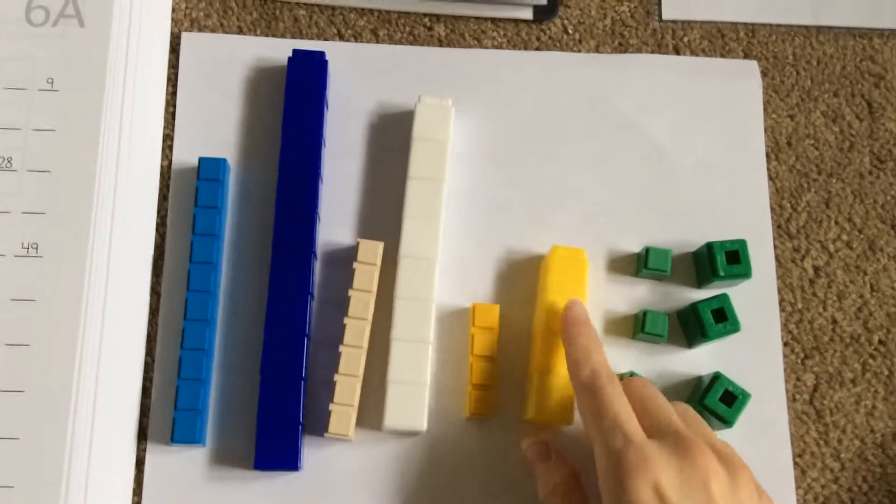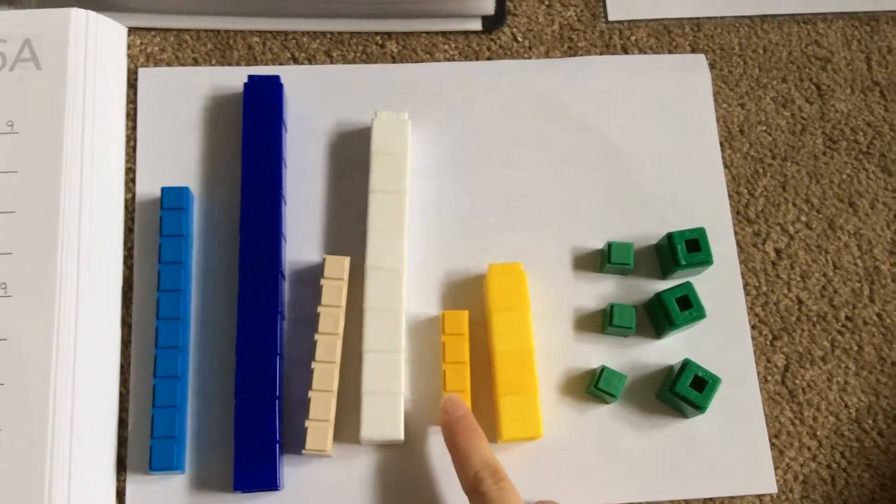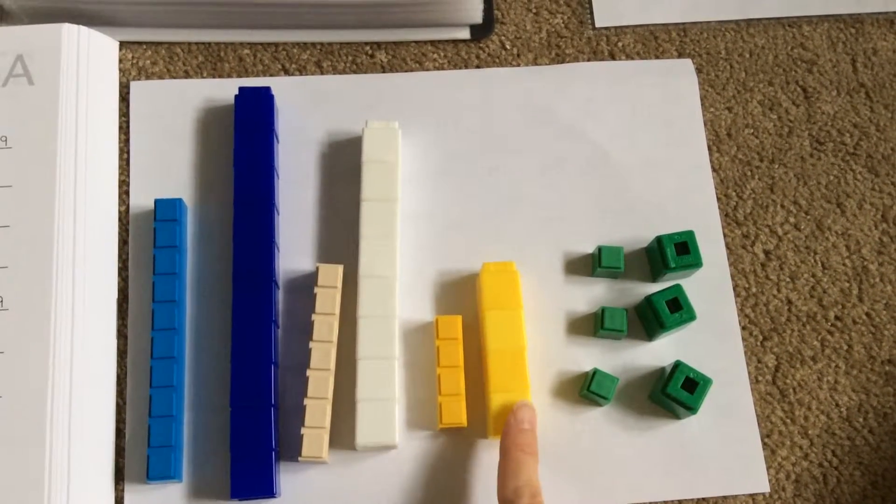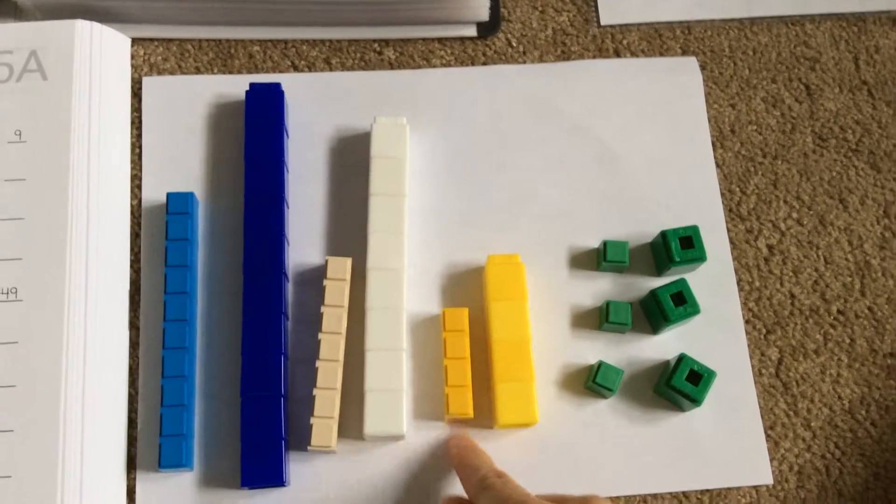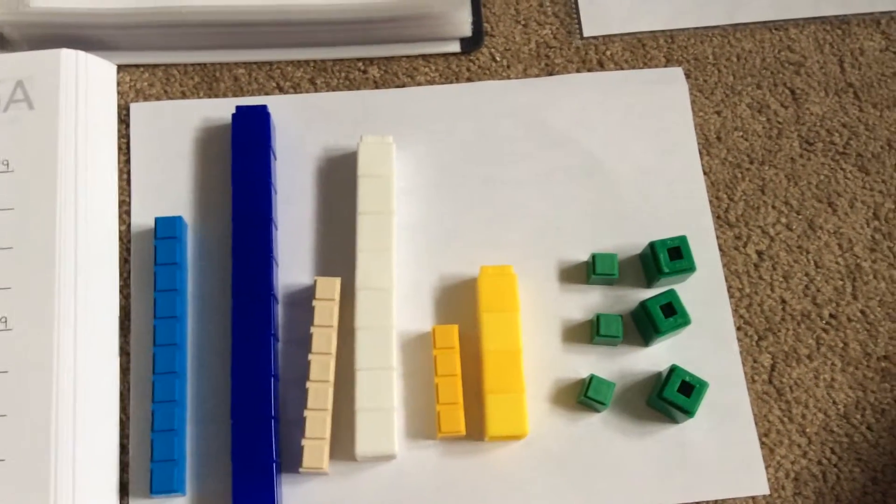But here are a few suggestions. If you are going to try and use Unifix, I would definitely try and match up the colors that they use for Math U See with your blocks. So the four, I would make that yellow, and just have your child leave that four together.